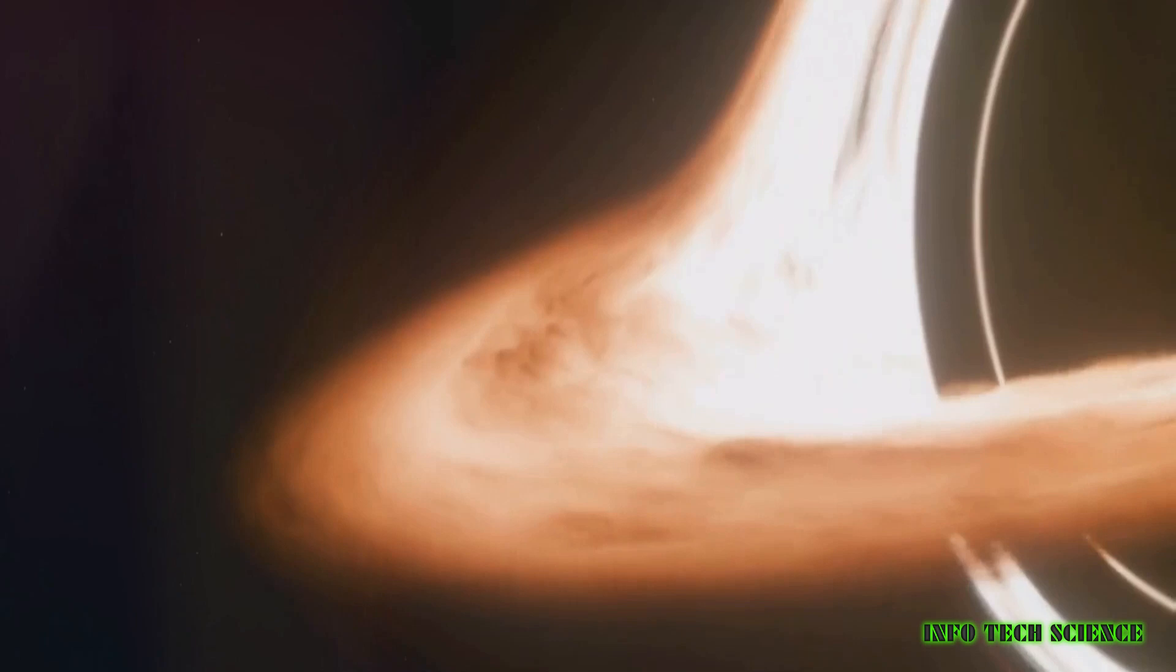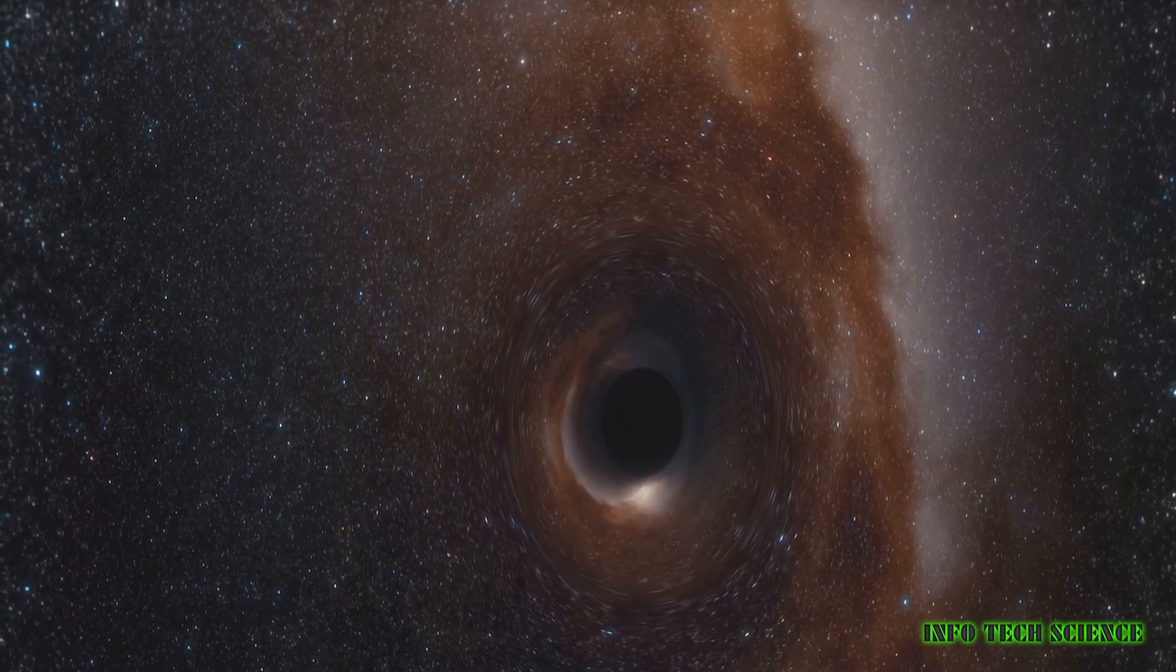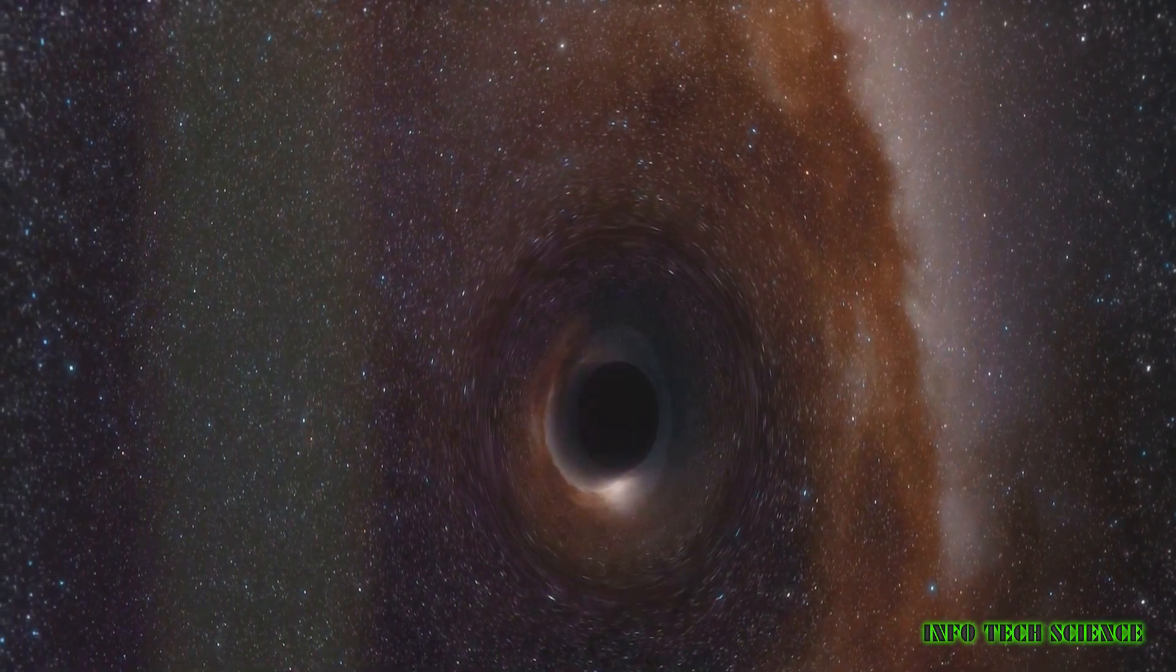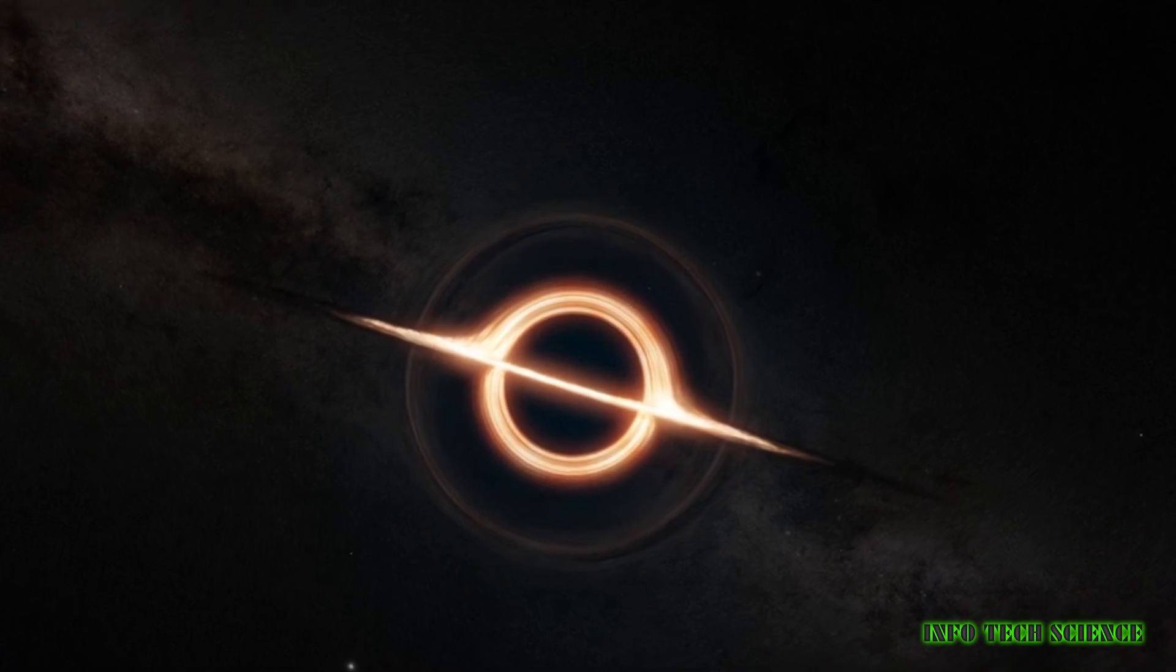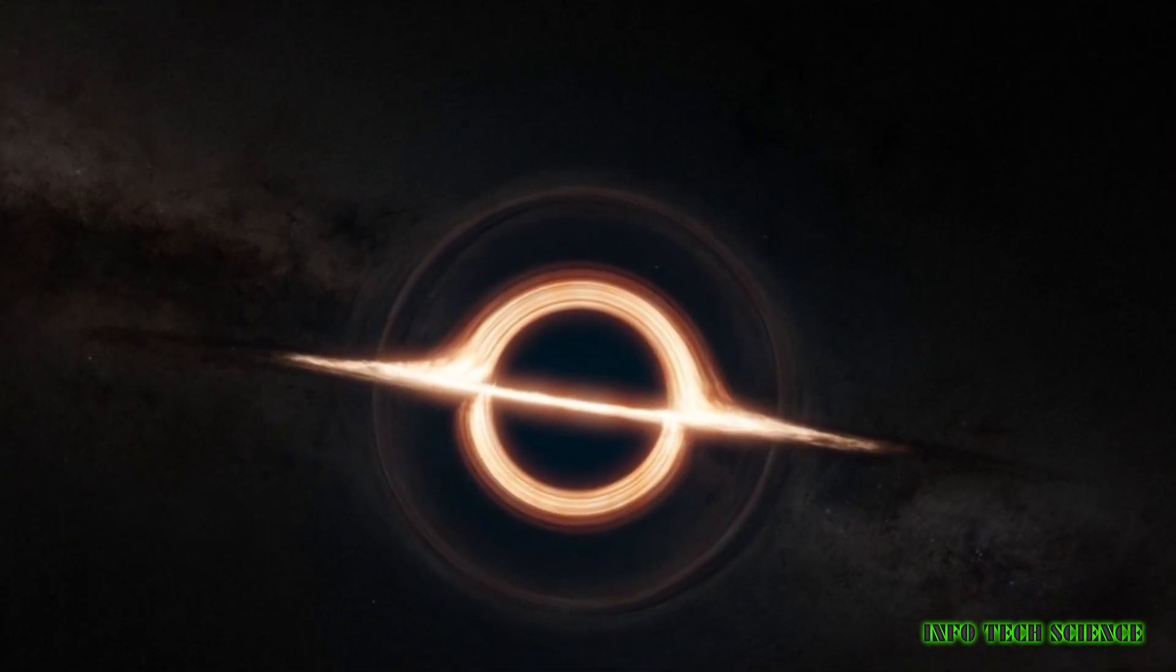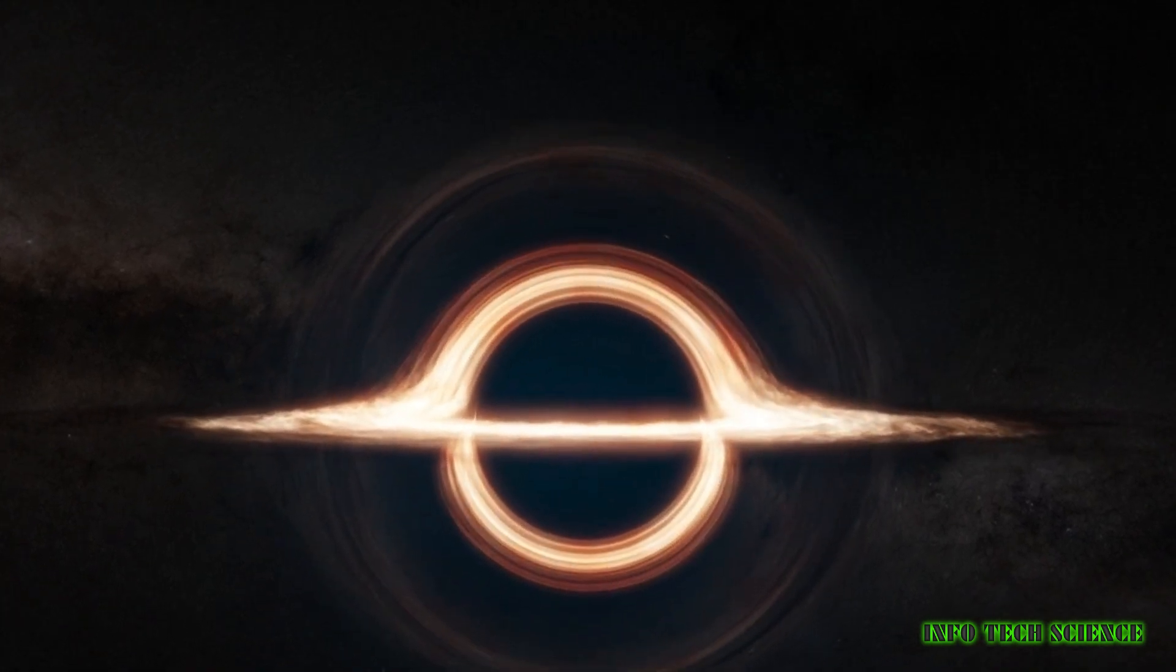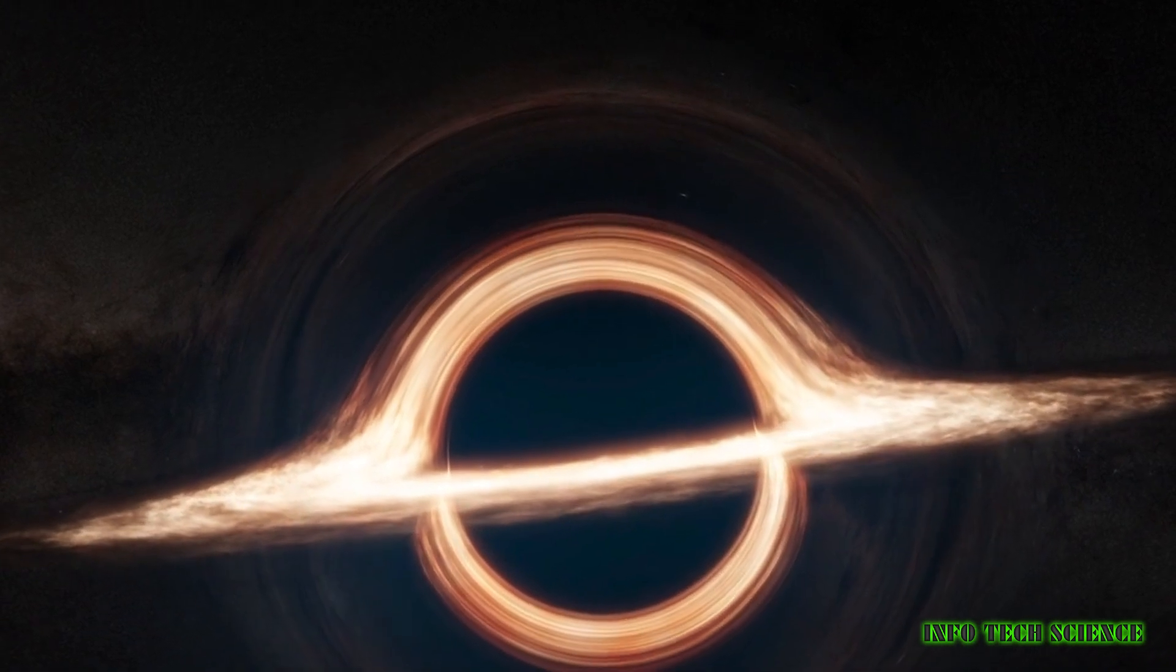The answer lies in the intense gravity of the black hole. Imagine standing at the edge of a cosmic abyss where particles mysteriously appear near the event horizon of a black hole. This spectacle is believed to be a result of disturbances in space-time caused by the black hole's immense gravity. But, here's the twist. The mass of the black hole itself is converted into energy that manages to escape from the event horizon. This process, known as Hawking radiation, gradually reduces the mass and energy of the black hole.